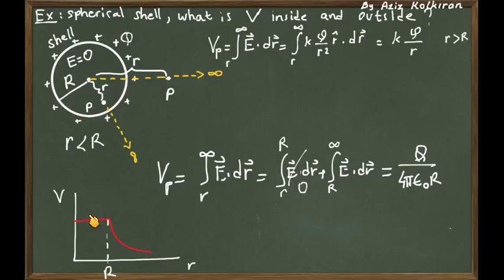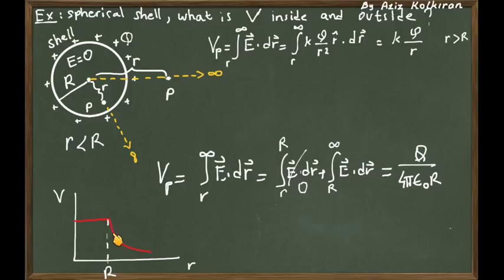This is the graph of the potential for all points inside and outside the shell. From r equal to zero to capital R, the potential is just constant at the value KQ divided by R. Right outside it drops as 1 over r to infinity. At infinity the potential is again zero, which you can easily check from this expression.